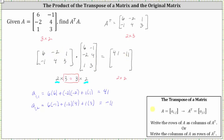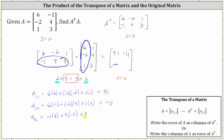Now let's determine the element in row two, column one, which means we multiply row two of the first matrix and column one of the second matrix. A sub two comma one is equal to negative one times six plus four times negative two plus three times one. We have negative six plus negative eight, that's negative 14 plus three, which is negative 11.